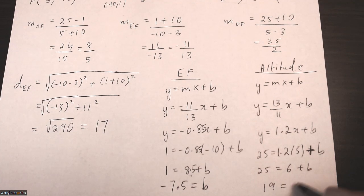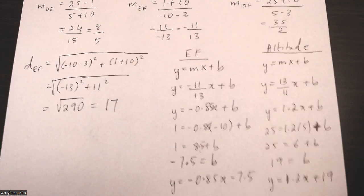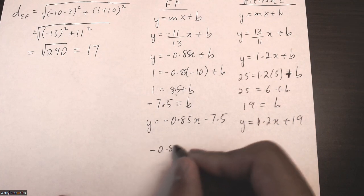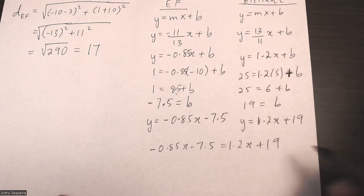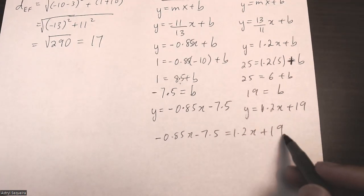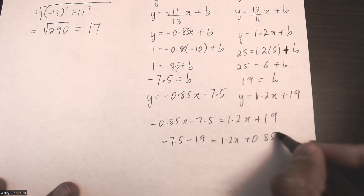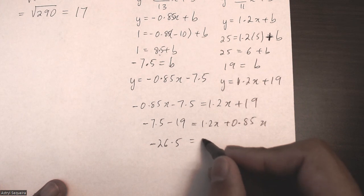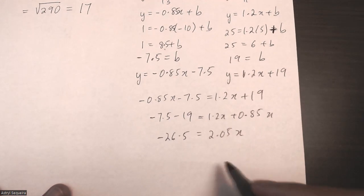Now I equate the two equations using substitution: negative 0.85x minus 7.5 equals 1.2x plus 19. Moving terms: negative 7.5 minus 19 equals 1.2x plus 0.85x, giving negative 26.5 equals 2.05x, so x equals approximately negative 12.9.